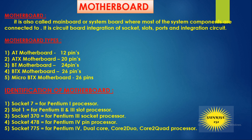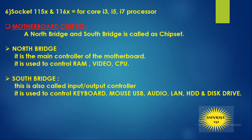How can you identify a motherboard? You can identify a motherboard by its socket type or slot type. Socket 7 is used for the Pentium 1 processor. Slot 1 is for Pentium 3 and Pentium 2 slot processors. Socket 370 is used for Pentium 3 socket processors. Socket 478 is for Pentium 4 processors. Socket 775 is for Pentium 4 Dual Core, Core 2 Duo, and Core 2 Quad processors. Socket 1155 and 1156 are for Core i3, i5, and i7 processors.